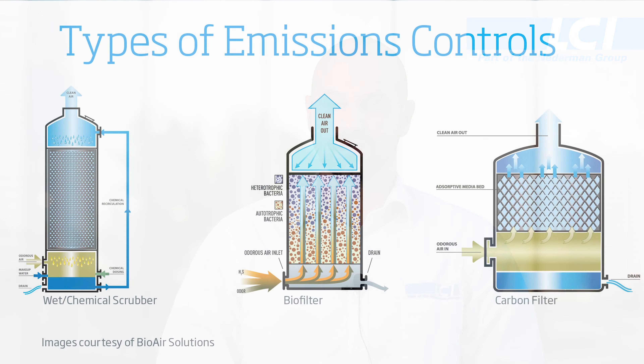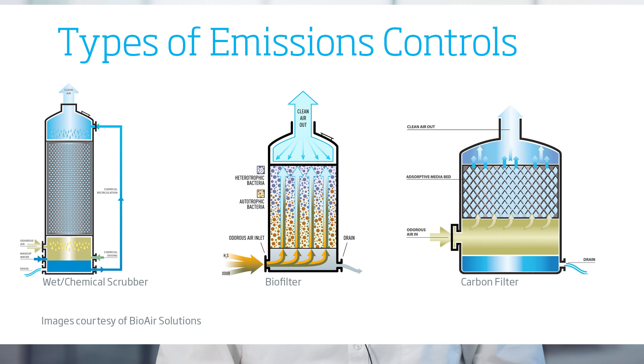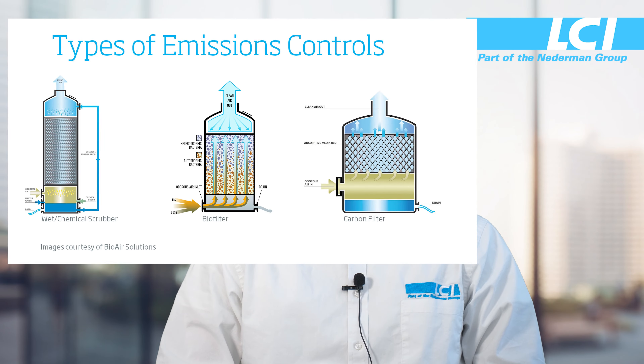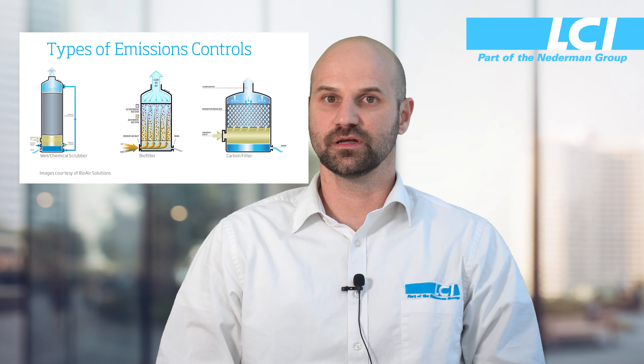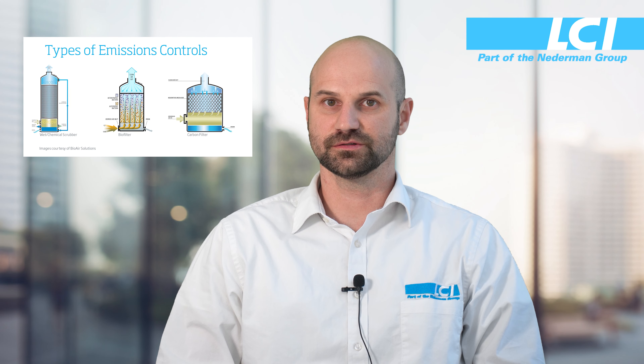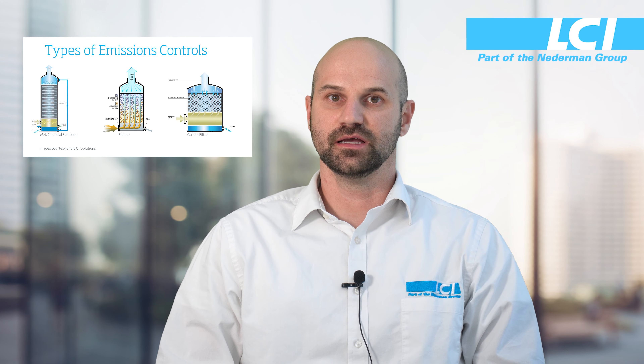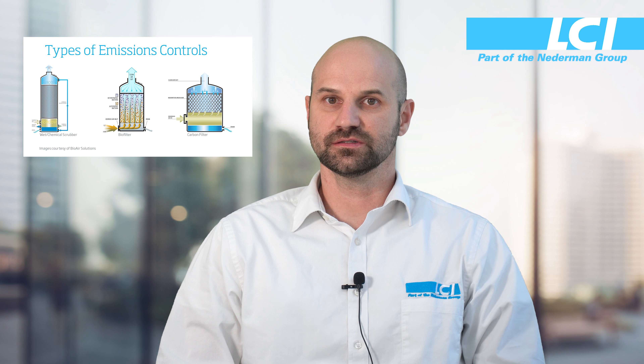After condensation, the vapor will head to the odor control system. Various types include wet scrubbers, biological filters, carbon filters, and thermal oxidizers. It's important to consider the cost of these systems as well as their operation and maintenance schedule.